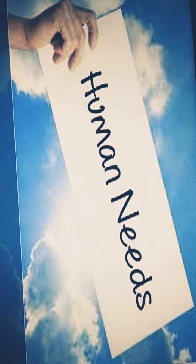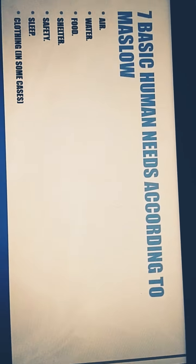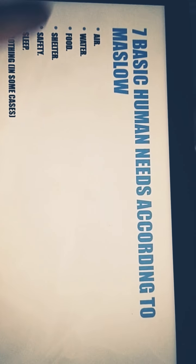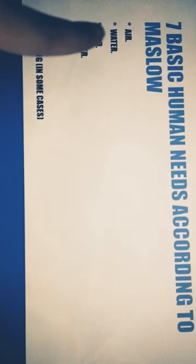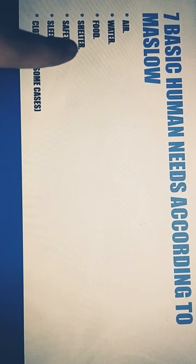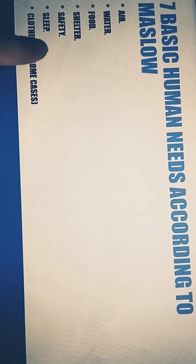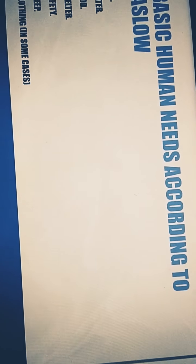Human needs. Seven basic human needs according to Maslow: air, water, food, shelter, safety, sleep, and clothing in some cases.